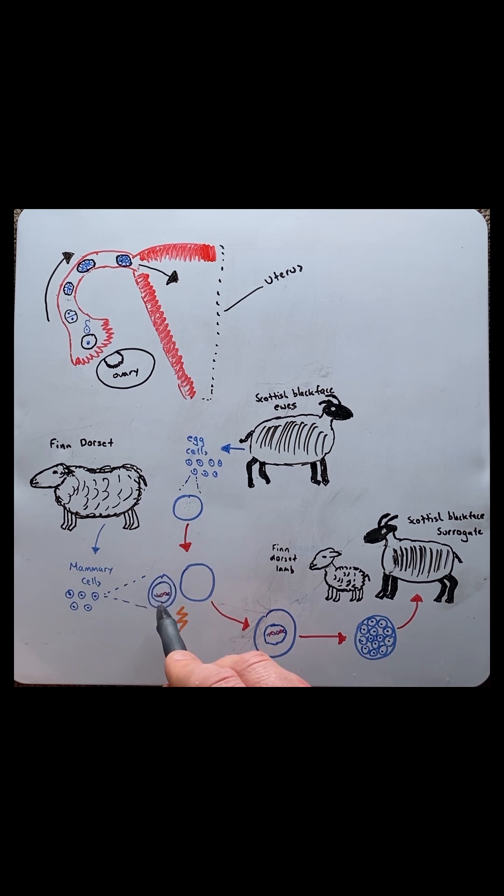They were able to merge the somatic cell with the empty egg cell using an electrical impulse. Then finally, using another electrical impulse, they stimulated that mix of cells to cause artificial fertilization.